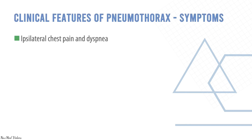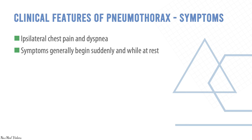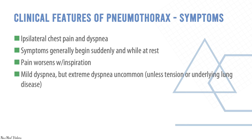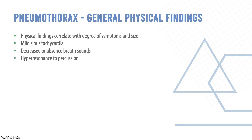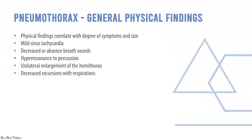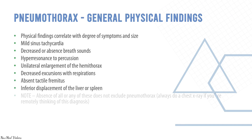Clinical features of pneumothorax include chest pain and dyspnea. Symptoms generally begin suddenly and while at rest; pain worsens with inspiration. Dyspnea is usually mild and extreme dyspnea is uncommon. Physical findings correlate with degree of collapse and include mild sinus tachycardia, decreased or absent breath sounds, hyperresonance to percussion, and unilateral enlargement of the hemithorax. Decreased excursions with respiration, absent tactile fremitus, and inferior displacement of the liver or spleen may also be seen.